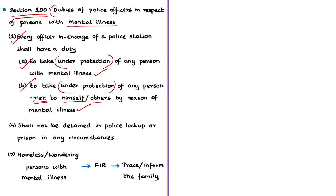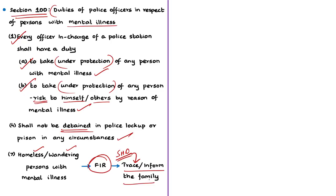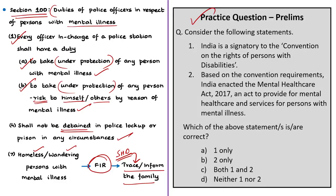Subsection 4 of Section 100 states that persons with mental illness shall not be detained in a police lockup or prison under any circumstances. Subsection 7 states that if a homeless person with mental illness is found wandering, an FIR for a missing person shall be lodged at the concerned police station, and the station house officer shall trace the family and inform them of the person's whereabouts. These are some of the rights with respect to persons with mental illness. With this, we have come to the end of the news article discussion session.